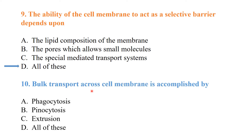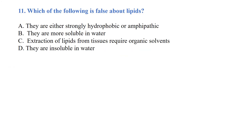Q10: Bulk transport across the cell membrane is accomplished by phagocytosis, pinocytosis, and exocytosis. 'All of these' is the best answer.